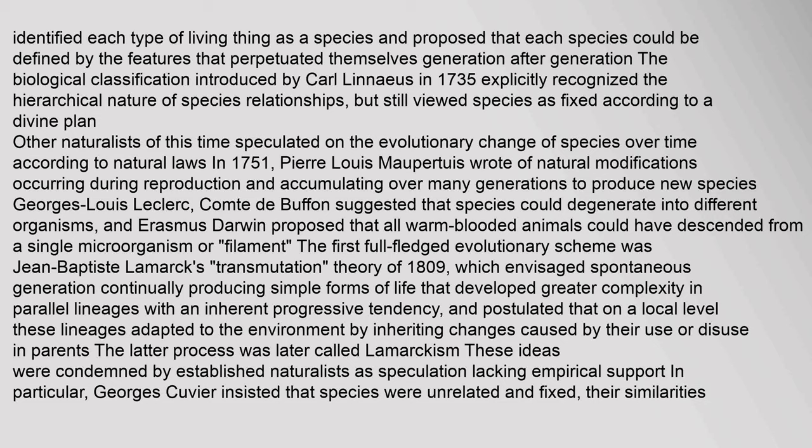Other naturalists speculated on the evolutionary change of species over time. In 1751, Pierre Louis Maupertuis wrote of natural modifications occurring during reproduction and accumulating over many generations to produce new species. Georges Louis Leclerc, Comte de Buffon, suggested species could degenerate into different organisms, and Erasmus Darwin proposed that all warm-blooded animals could have descended from a single microorganism. The first full-fledged evolutionary scheme was Jean-Baptiste Lamarck's transmutation theory of 1809.